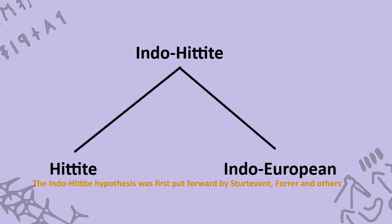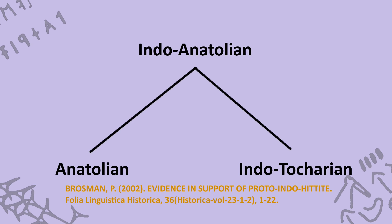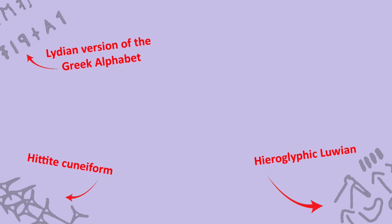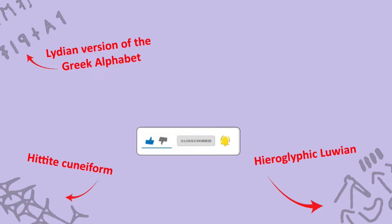The Indo-Hittite hypothesis is more commonly called the Indo-Anatolian hypothesis these days. The name update reflects the fact that Hittite isn't the sole occupant of the Anatolian branch. Brosman (2002) goes over some of the main ideas in favour of this hypothesis. It's important to note that nobody disputes the connection between Anatolian languages and the Indo-European languages. Rather, the crux lies in the distinction that some researchers propose: they argue there's enough differentiation between Indo-European and Anatolian to warrant categorising them as separate branches of the same proto-language, which they term Indo-Hittite or Indo-Anatolian.